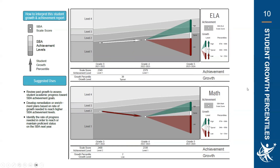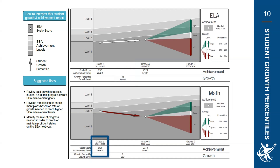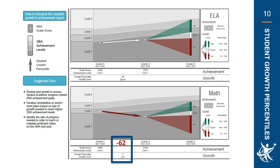Here is another example. This student took both ELA and math tests and was in two different cohorts. In third grade ELA, the student earned 2349, or level one; in fourth grade, still level one, but earned 2379 for a gain of 30 points — considered typical growth with a student growth percentile of 38. In math, however, the student went from level two with a score of 2400 down to level one with a score of 2338, losing 62 scale score points. Compared to their academic peers, that student was in the 2nd percentile, indicating low growth.